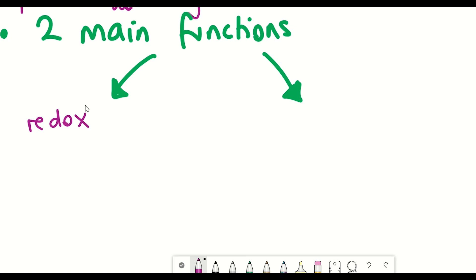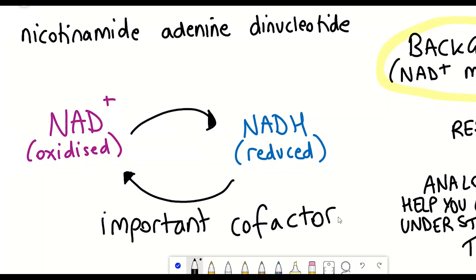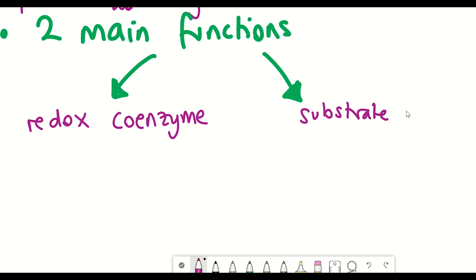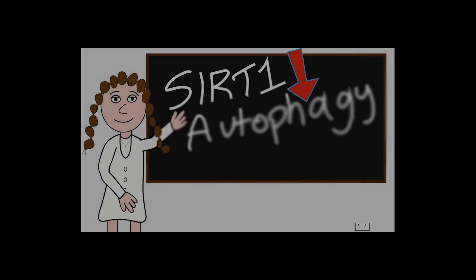Firstly, NAD plus can act as a redox coenzyme by alternating between its oxidized and reduced state, and that's really important for metabolism. But NAD is also used as a substrate by NAD consuming enzymes, and these include sirtuins and PARP1 and also CD38. I've spoken about SIRT1 in a previous video and PARP1 are proteins that act in response to DNA damage, and you'll learn more about CD38 in this video.